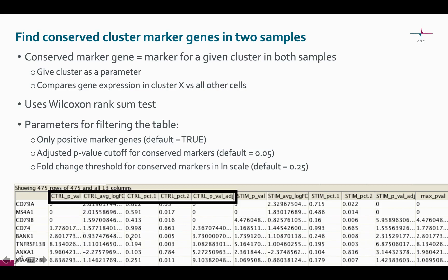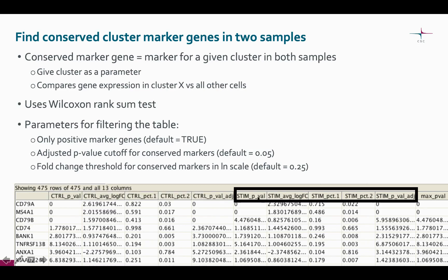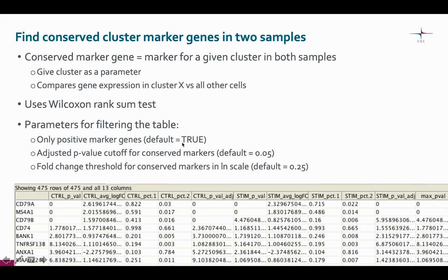The value labeled two means the percentage in all the other cells. All these values are computed for both samples, and parameters for the tool are looking at both of the resulting values. You can filter this table based on these three parameters. By default, only the positive marker genes are reported — that is, genes that are more highly expressed in the cluster in question compared to the other cells.